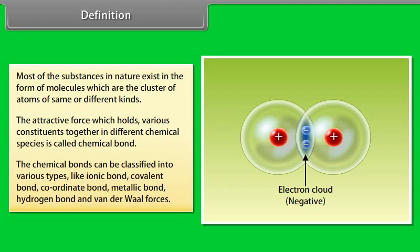Chemical bonds can be classified into various types: ionic bond, covalent bond, coordinate bond, metallic bond, hydrogen bond, and Van der Waals forces.